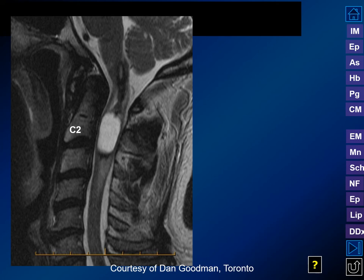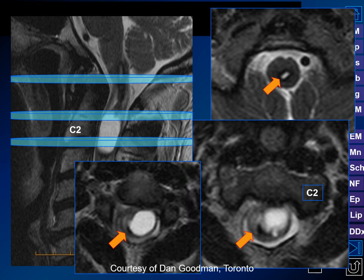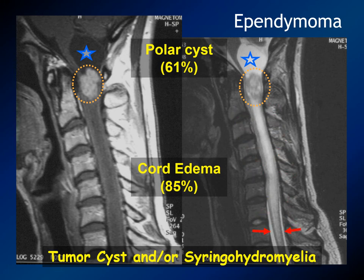Looking at a typical cervical spinal cord ependymoma: we have expansion of the cord, a partially fluid and partially solid mass, with extensive areas above and below appearing hypointense from hemosiderin on T2. The corresponding axial images show a rim of hemosiderin around the outside of the lesion — typical for ependymomas. We can also see polar cysts, the solid portion showing relatively homogeneous enhancement, a fluid-filled area that may represent tumor-related syringohydromyelia or a neoplastic cyst, and edema extending below. This is a very typical cervical ependymoma.